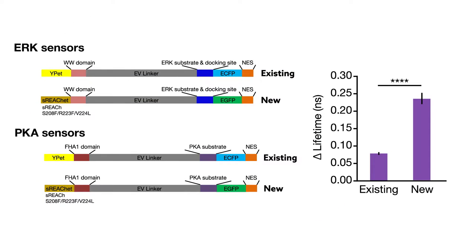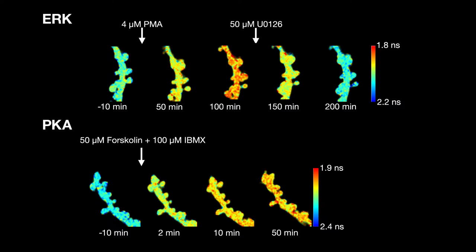To overcome this limitation, the researchers modified existing sensors so that they output three times more signal, making it possible to measure ERK and PKA activation within single spines.